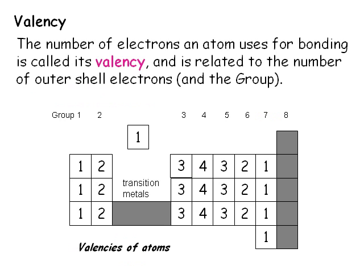This idea is called valency. The valency of an atom is the number of outer shell electrons the atom uses in forming bonds. We can see that this is reflected in the periodic table. Atoms in groups 1 to 4 use all their outer shell electrons to form bonds. Atoms in groups 5, 6 and 7 can gain or share 3, 2 or 1 electron respectively. The atoms in group 8, also known as group 0, have full outer shells and tend not to form chemical bonds.